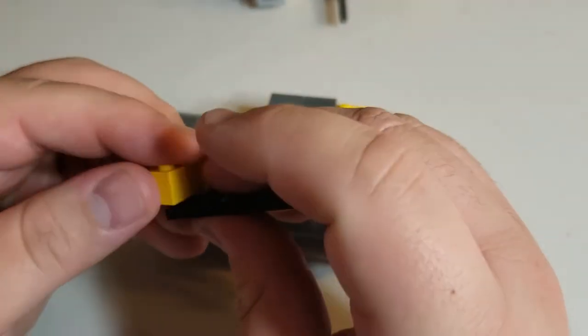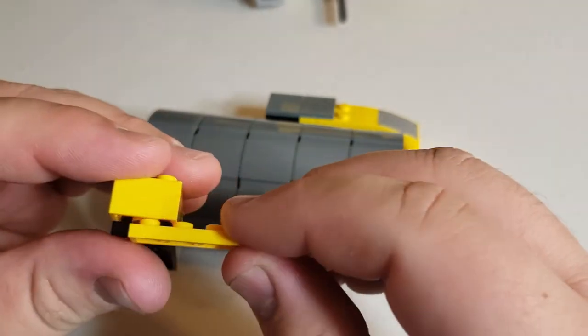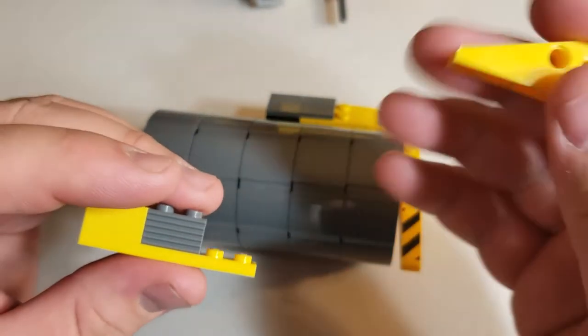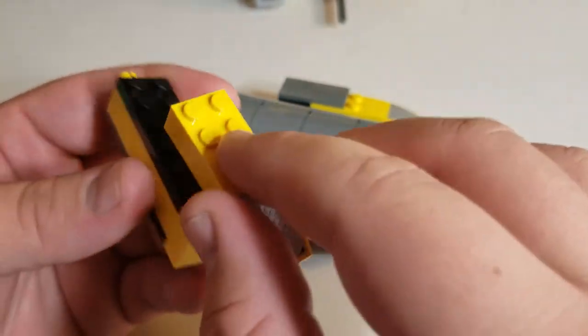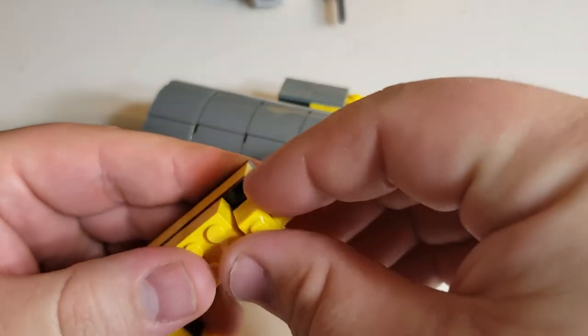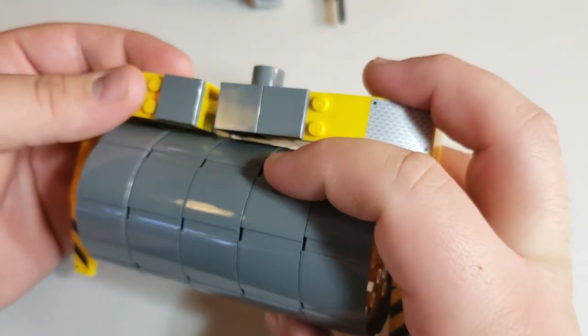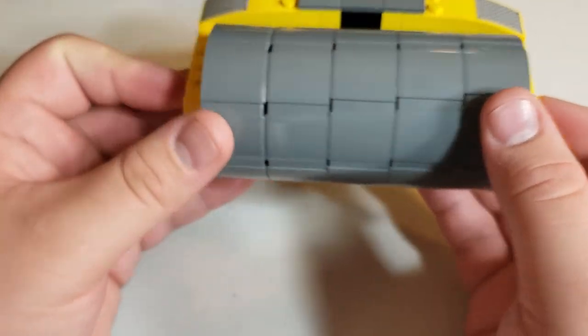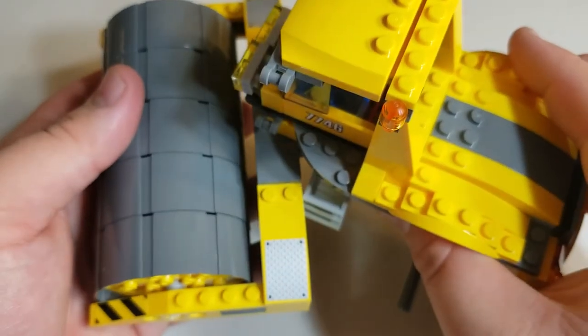Pretty much same process, just backwards. So now this is going instead of towards me, it's going away from me, but otherwise same process. Lock it all in place. Another plate on top. There it is, that's done. And that locks, I said so that gives you your articulation.